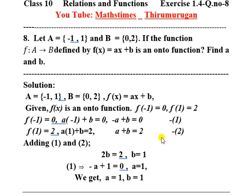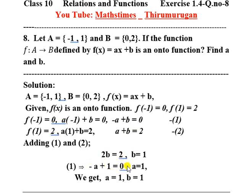Now solving equations 1 and 2: from the equations, b = 1. Substituting b = 1 into equation 1: -a + 1 = 0, so a = 1. Therefore, we get a = 1 and b = 1. That is the answer. Thank you.